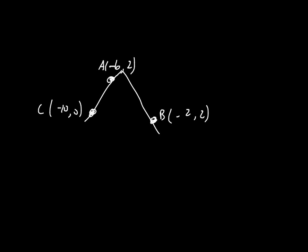Finding the rule of an absolute value function given three points goes like this. You start by finding the rule of the line with the two points on it. On this side over here I'm going to find the rule of the line, starting by finding the slope of the line.